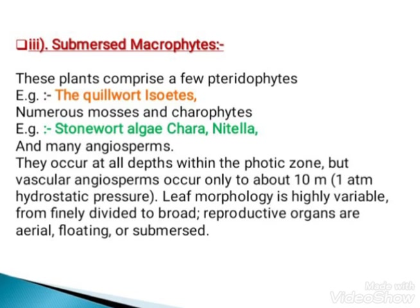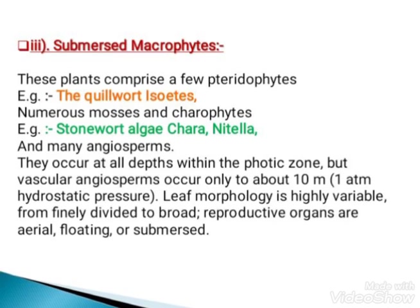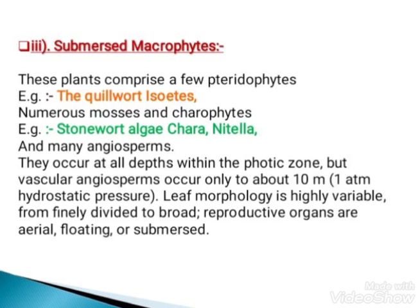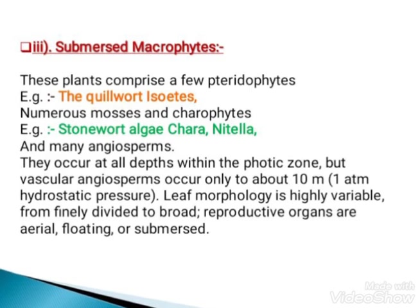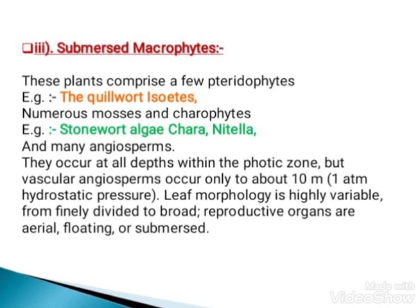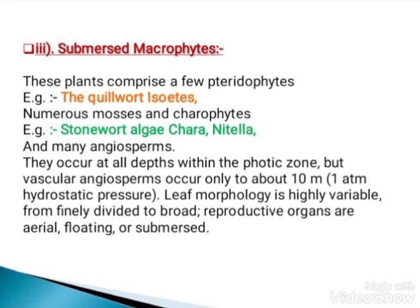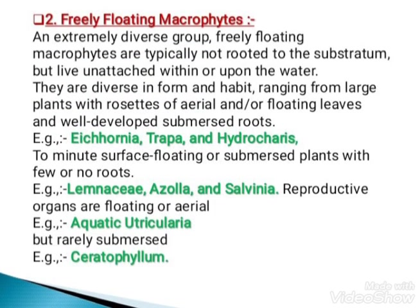Third: submerged macrophytes. This group comprises a few pteridophytes such as quillwort, Isoetes; numerous mosses; and charophytes such as stonewort algae; and many angiosperms. They occur at all depths within the photic zone, but vascular angiosperms occur only to about 10 meters. Leaf morphology is highly variable, from finely divided to broad. Reproductive organs are aerial, floating, or submerged.